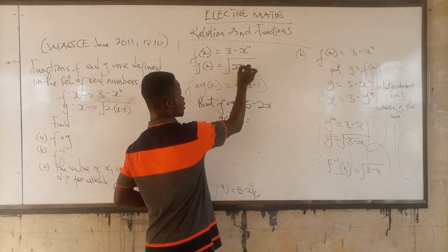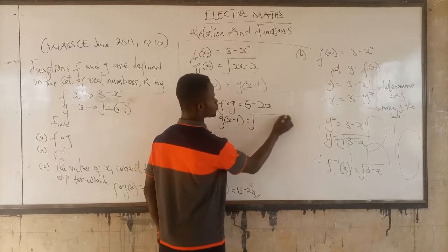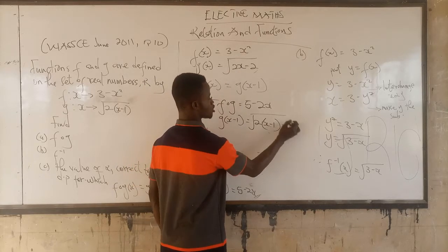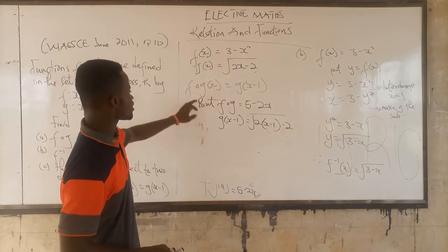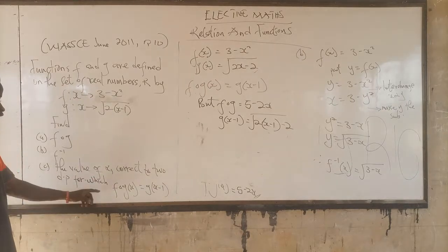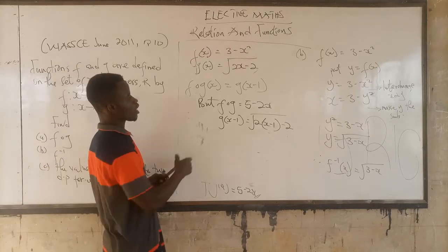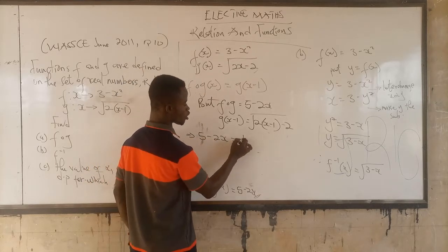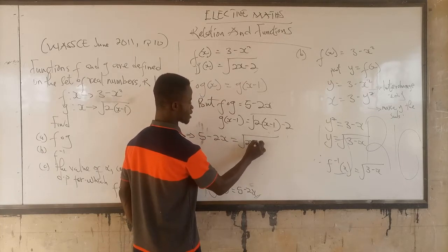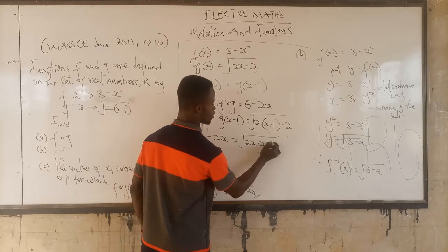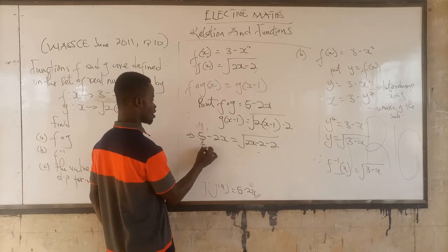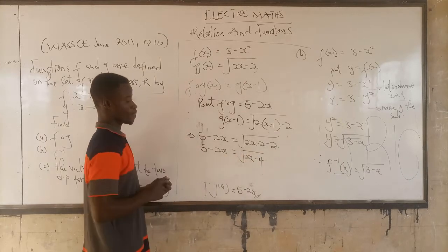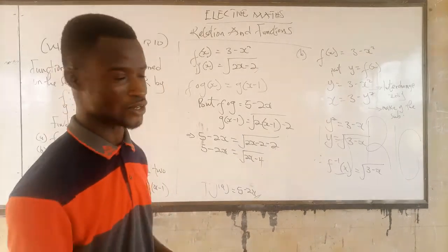So g(x minus 1) = square root of (2x minus 2) minus 2, which simplifies to square root of (2x minus 4). Now setting fog equal to g(x minus 1), we have 5 minus 2x = square root of (2x minus 4). We now have an equation to solve. To remove the square root, we square both sides.